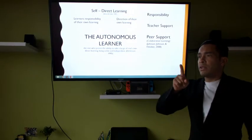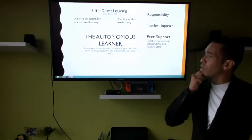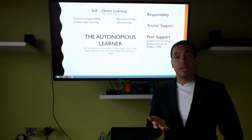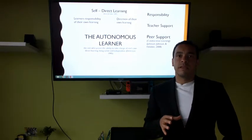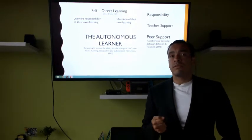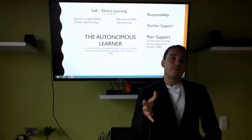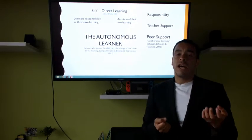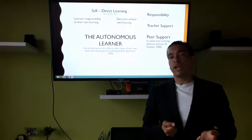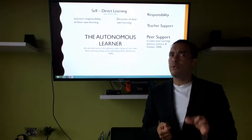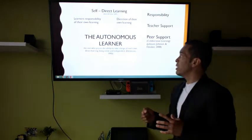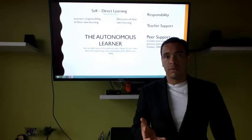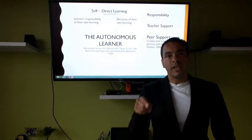Peer support — Johnson and Johnson, 2008 — means you actually need your partner to help. You can learn from your partners; you need to recognize that they also know something you probably don't. You can also ask for feedback and assessment from your peers to learn a little bit more. When you are autonomous, it doesn't mean that you work by yourself. It means that you can look for the right kind of help when it is needed.